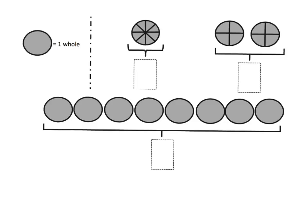We're noticing that one whole is a circle — here is a circle like a pie, and that is equal to one whole. When we look at the fact that this circle, which is one whole, has been cut into eight little pieces, being cut into eight intervals means the denominator is going to be eight.